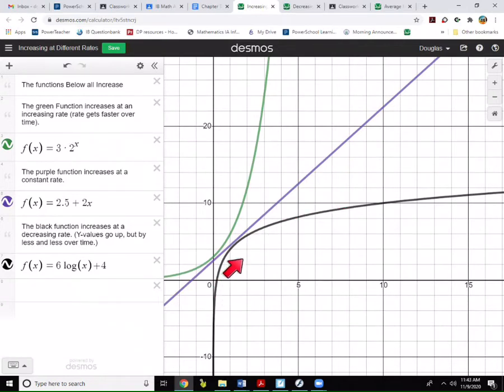The black function slows down as it increases, the purple function stays at a constant rate as it increases, and the green function speeds up as it increases. So we have increase at an increasing rate, increase at a constant rate, or increase at a decreasing rate.